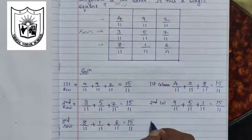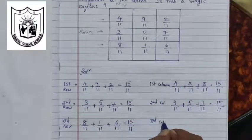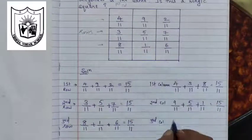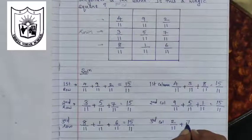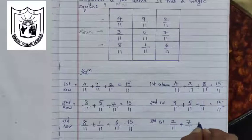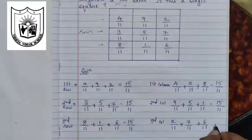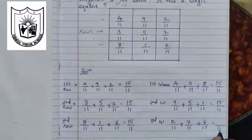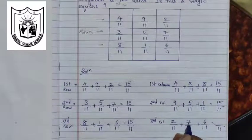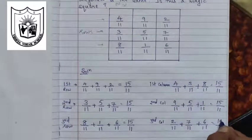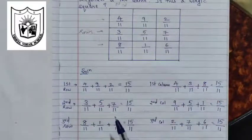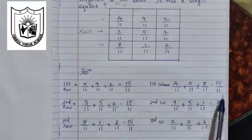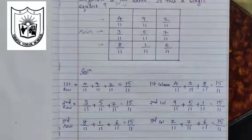Let us now check the third column: 2 upon 11 plus 7 upon 11 plus 6 upon 11. The denominator is common, so we write it once. 2 plus 7 is 9, plus 6 is 15. So in every row and every column when we add all three fractions, we have got the same answer, that is 15 upon 11.